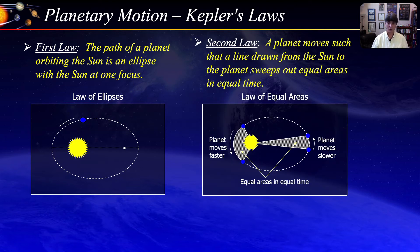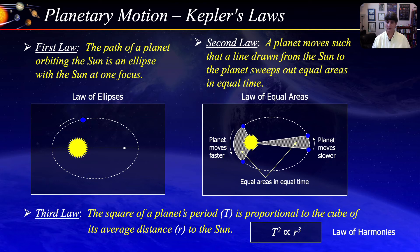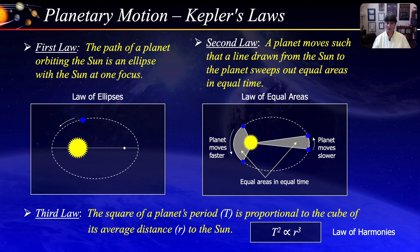The second law, also known as the Law of Equal Areas, states that a planet moves such that a line drawn from the Sun to the planet sweeps an equal area in equal time — meaning a planet moves faster when closest to the Sun and slower when farther away. The third law, also known as the Law of Harmonies or Periods, states that the square of a planet's period, or the time for one complete revolution, is proportional to the cube of its average distance to the Sun. In its full equation format, this allows us to calculate the distance of any planet based on its observed period, and also allows us to calculate the mass of the Sun given a planet's distance and period.